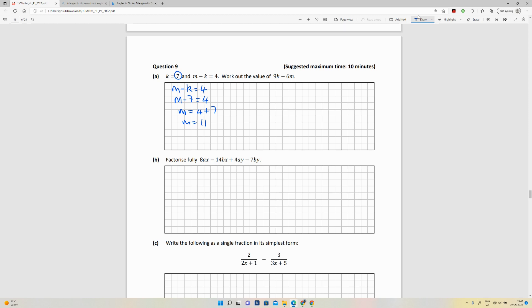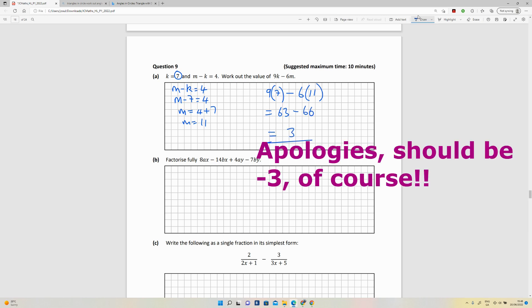And then work out the value of nine k minus six m. So nine k, they've told me what k is so I can put seven directly in there, minus six m and now I know what m is from over here. So that's nine sevens is 63 minus 66 is equal to three. So that's the answer that they're looking for.